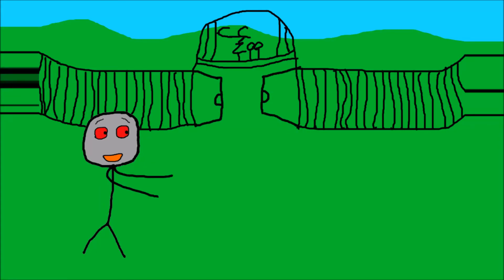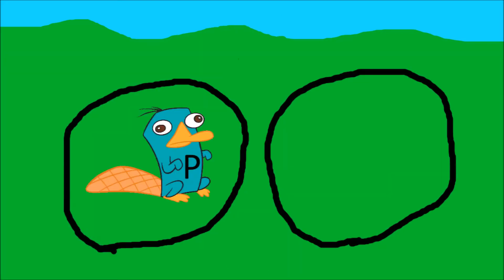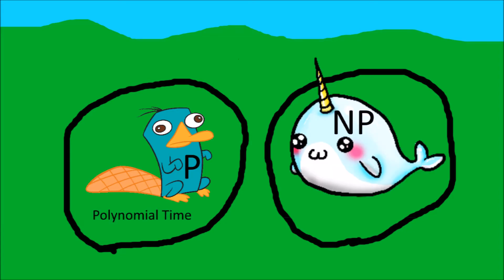Hello, and welcome to the computational complexity zoo. Here we hold over 500 species of computational complexities, but since we don't have all day, we'll mainly be discussing our two main attractions: polynomial platypus, aka polynomial time, and non-deterministic narwhal, aka non-deterministic polynomial time, aka Bob.